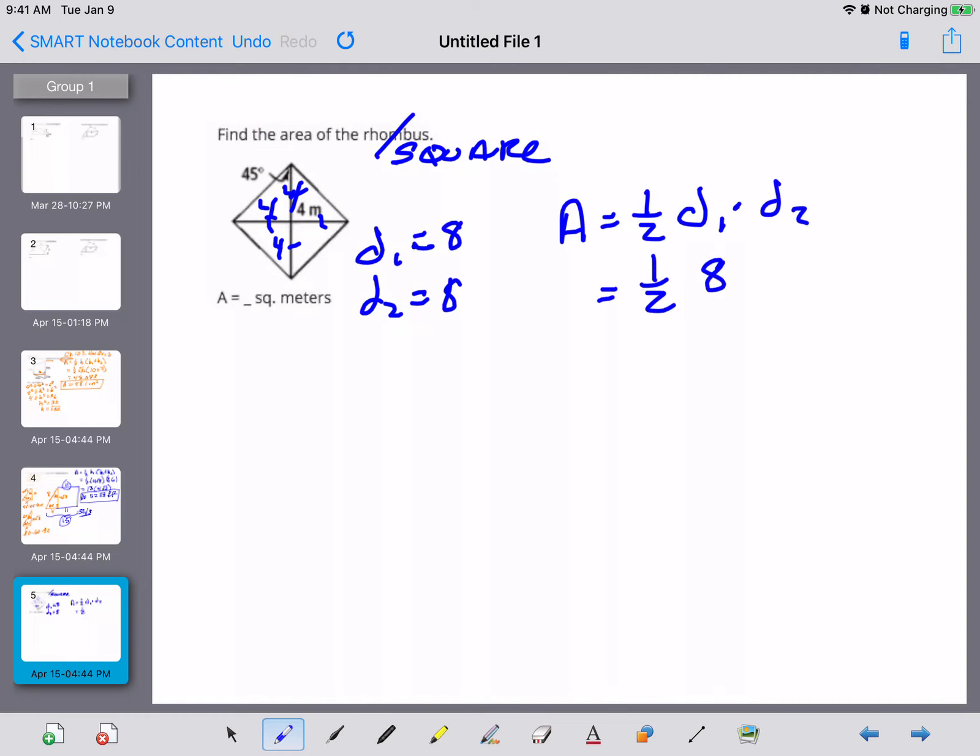So well the area of this rhombus slash square that we really have is one half eight times eight which is thirty two meters squared.